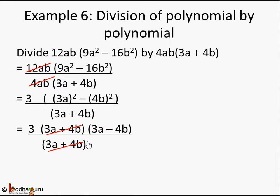And what you're left with is 3(3a - 4b), which you can further simplify using the distributive law. a times (b - c) is a times b minus a times c. So it becomes 3 times 3a will become 9a, 3 times 4b will become 12b, and don't forget the minus sign. So the final answer is 9a - 12b.